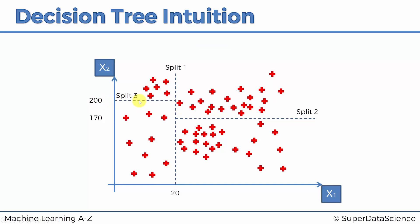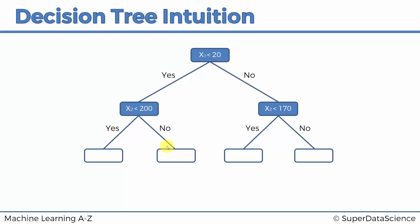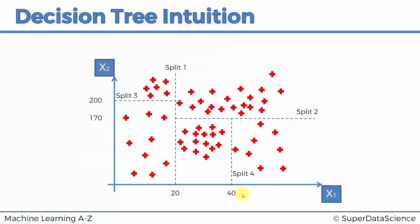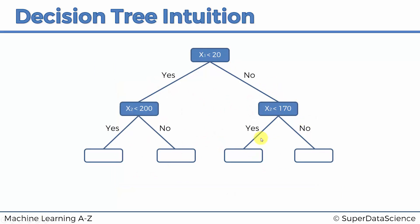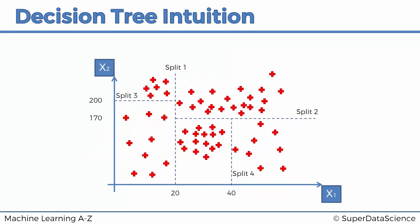Then split three happens on the other side, and it checks if x2 is less than 200. Let's add that here: x2 is less than 200. Then split four happens at 40, and it checks if x1 is greater or less than 40. Split four only happens for the points that answered to split one, no, it's not less than 20, and to split two they answered no—yes, it's actually less than 170. So no, it's not less than 20. Yes, it's less than 170. And then this is where split four happens: x1 is less than 40, yes, no. Alright, so that's our decision tree. It's done, it's drawn.